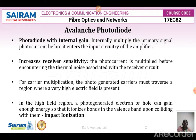For carrier multiplication, the photogenerated carriers must traverse a region where a high electric field is present. In the high field region, when a photogenerated electron or hole gains enough energy so that it ionizes a bond available in the valence band upon colliding with it, that type of ionization is called impact ionization. In the high field region, when a photogenerated electron or hole gains enough energy and ionizes the bonds present in the valence band, an electron is released from the covalent bond and will go and collide with another bond connected to another atom. This is called the impact ionization process.